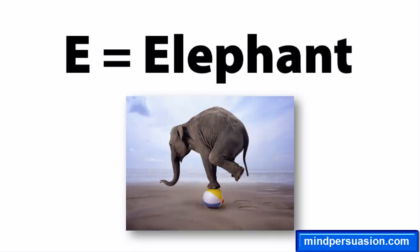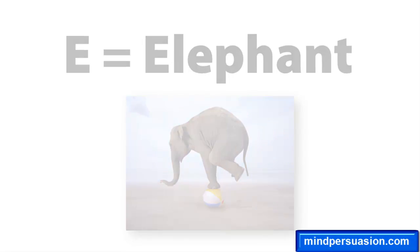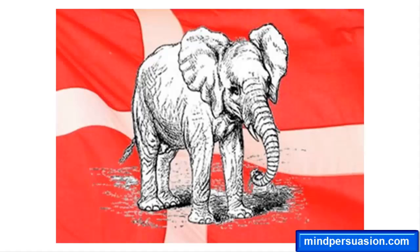Then tell them they are thinking of a gray elephant from Denmark. If you want, you can actually write 'gray elephant from Denmark' on a piece of paper, fold it up, and give it to them before you do the trick, then have them open it up when you're finished.